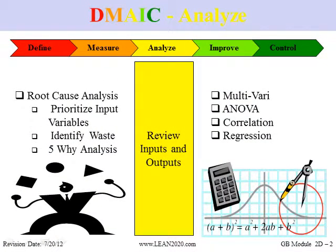During the Analyze step, we're going to take all of the inputs that we've identified and review them versus the outputs. We're going to try to prioritize these so that we're not working on 100 inputs — we're working on the more focused inputs. We're going to utilize a number of different tools. I've already exposed you to the C&E matrix and the FMEA. I'm not going to talk too much about multivariate, ANOVA, correlation, and regressions, but those are some additional tools that you may see your green belt or black belt, your project leader, bringing you through.